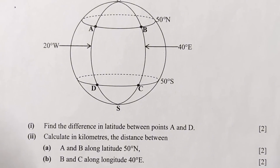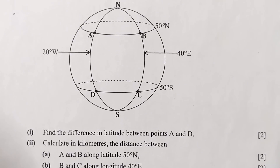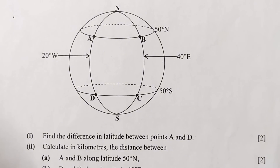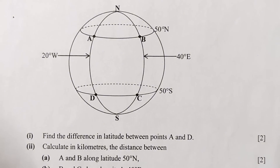So let us start with Roman numeral 1 — calculating the difference in latitude between points A and D. These two points are falling on the same longitude. That is why they are asking us to find the difference in latitude, because they are positioned on different latitudes. A is on 50 degrees north, then D is on 50 degrees south. So this means they are falling on different hemispheres. So to get the difference in latitude, we'll simply add the two values given on these latitudes.